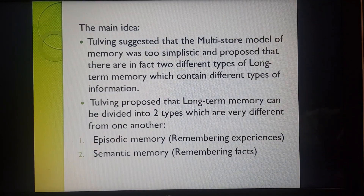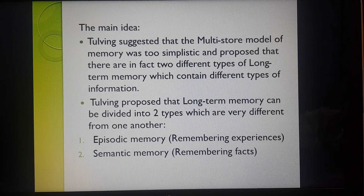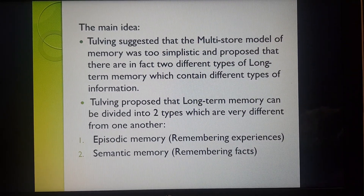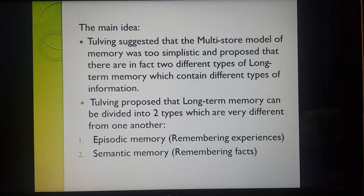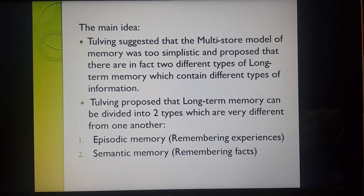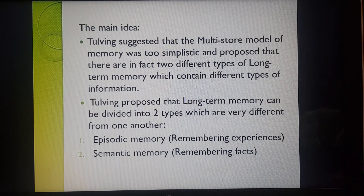The main idea behind this theory is that Tulving suggested that the multi-store model of memory was too simplistic and more descriptive rather than explanatory. So he proposed that there are in fact two different types of long-term memory, which the multi-store model doesn't really delve into detail about — whereas the multi-store model only proposed one type.